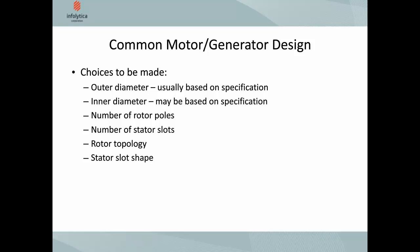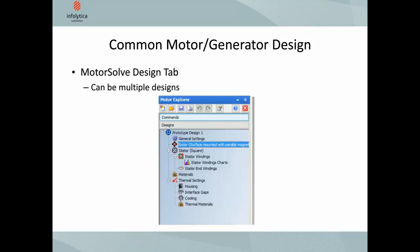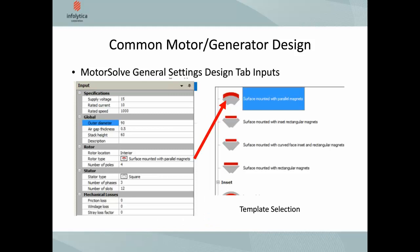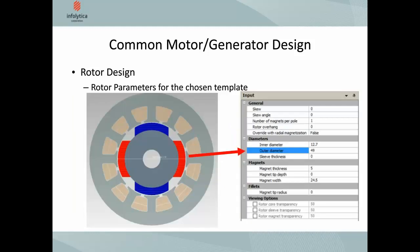Here is the design page or navigation window. Under general settings and rotor settings, you can start by selecting the type of rotor. In Motorsolve this is template-based, so you simply choose the rotor type from a list of templates — it gives you a graphical window of that operation. You can then set the parameters for the various geometry entities; for example, the outer diameter and all different rotor parameters are available in the input panel.